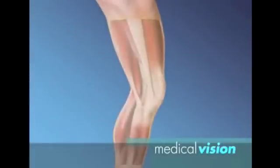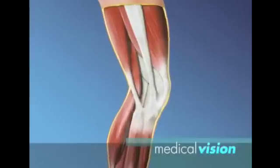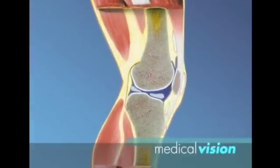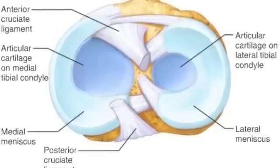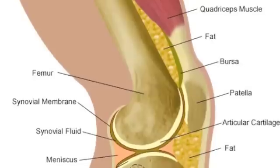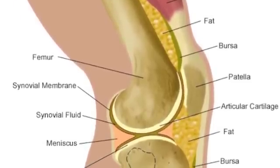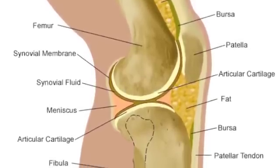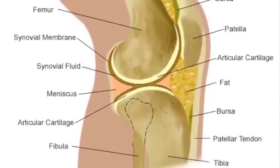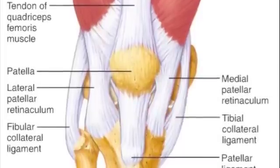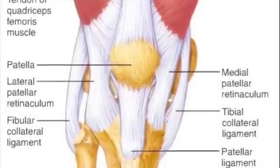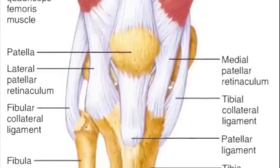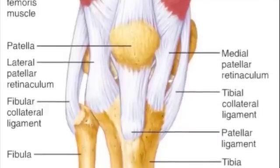Despite its single joint cavity, the knee consists of three joints in one: an intermediate one between the patella and the lower end of the femur, and lateral and medial joints between the femoral condyles above and the C-shaped menisci or semi-lunar cartilages of the tibia below. The knee joint is unique in that its joint cavity is only partially enclosed by a capsule. The relatively thin articular capsule is present only on the sides and posterior aspects of the knee. Anteriorly, where the capsule is absent, three broad ligaments run from the patella to the tibia below. These are the patellar ligament flanked by the medial and lateral patellar retinacula, which merge imperceptibly into the articular capsule on each side.